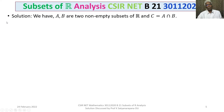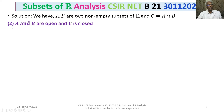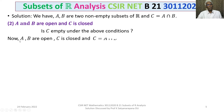Let us now consider the statement given in Option 2: A and B are open and C is closed. Under these conditions, is C empty? Now, A and B are given to be open and C is closed, and C equals A intersection B. Since A and B are open, A intersection B is open. Therefore C is open. But C is also given to be closed. Therefore, C is both open and closed.